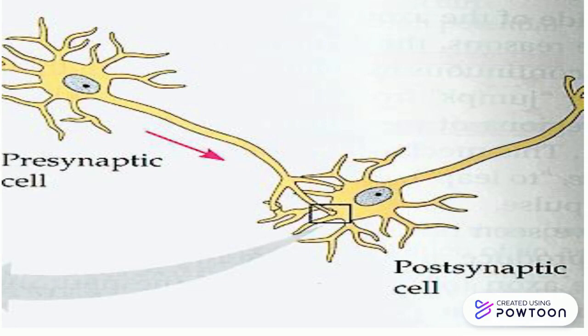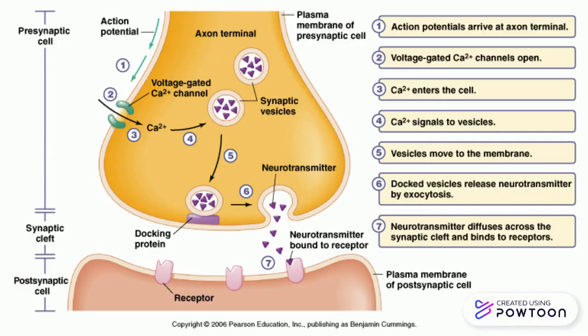In this process, the signal travels along the axon to the axon terminal and then to the synaptic knob. The synaptic knob is where the calcium channels open up and allow extracellular fluid to move into the area.